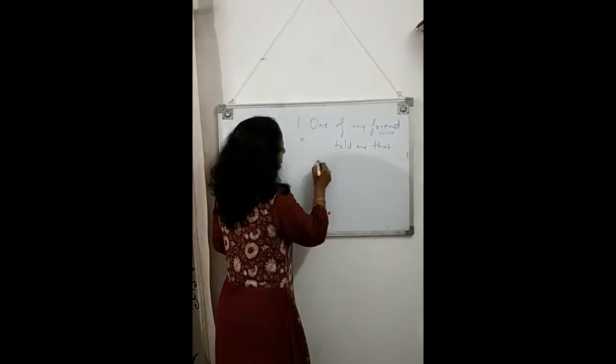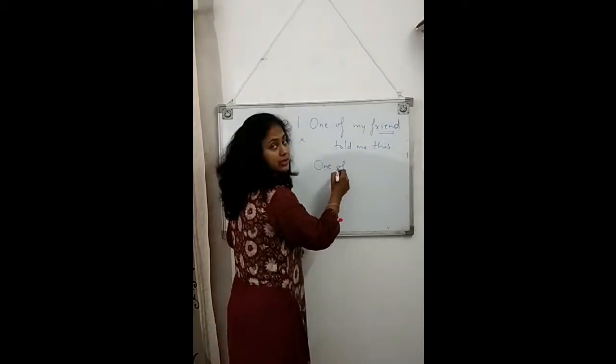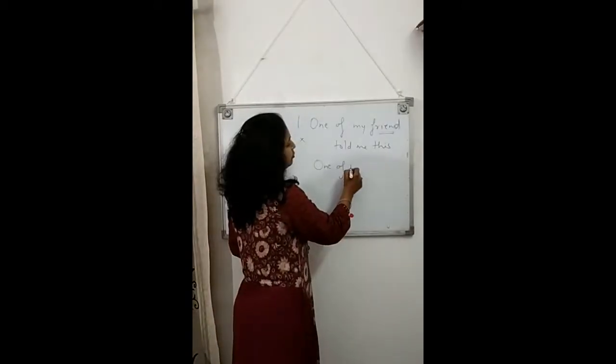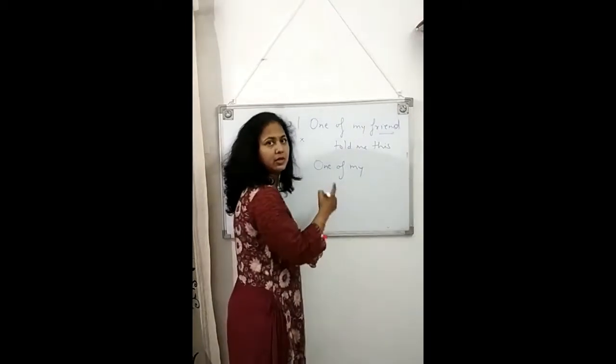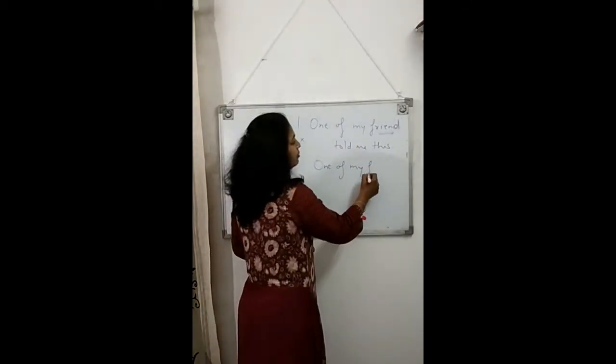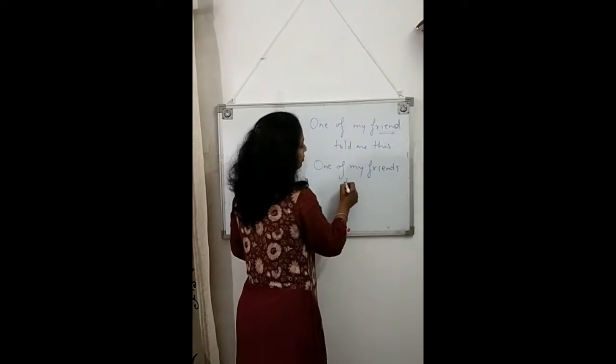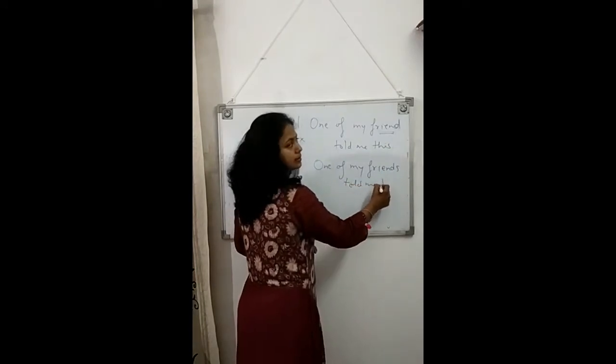In the correct sentence, the expression 'one of' is always followed by a plural noun. 'One of my friends told me this.' This sentence is correct.